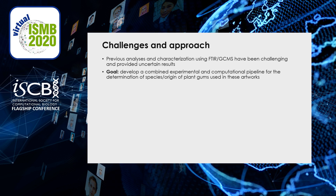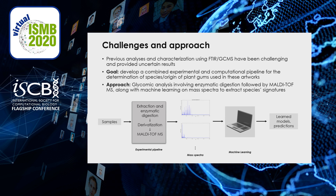Our goal is to develop a combined experimental and computational workflow for the identification of these origins of plant gums used in artworks. Our approach is to use a glycomic analysis which involves enzymatic digestion of samples — either reference gums or samples drawn from artworks — derivatization of them, followed by MALDI time-of-flight mass spectrometry. The resulting mass spectra are used as data to train a machine learning model, which we then use to make inferences about the samples and predictions when faced with samples of unspecified or doubtful origins.